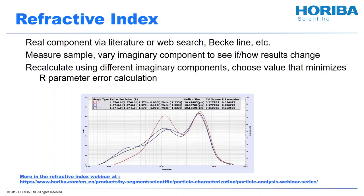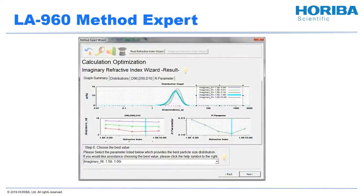We have a tool for doing this in the LA 960 called the Method Expert. I tell it the sample I'm going to work with and the range of refractive index values to try. It generates distribution graphs for each of the real and imaginary refractive index values tried, plus a plot of diameter as a function of refractive index and R parameter as a function of refractive index. Then I can look at those plots, pick the value where the R parameter is minimized, and select my imaginary refractive index.